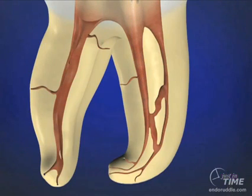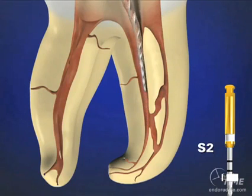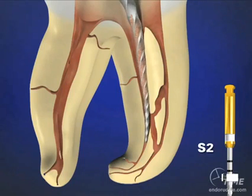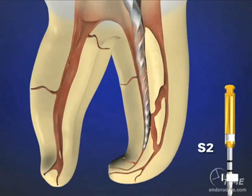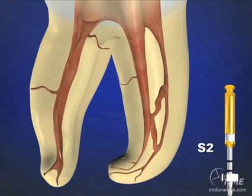After every rotary file, irrigate. Recapitulate with the size 10 file, then re-irrigate. With Shaper 2, the stop is adjusted so the instrument stays inside the secured zone confirmed with the 15 hand file. The instrument is allowed to float in passively; by laterally brushing, we expand the shape so the instrument moves deeper. The debris should always be away from the terminal part of the file. After every rotary file regardless of manufacturer: irrigate, recapitulate, re-irrigate.